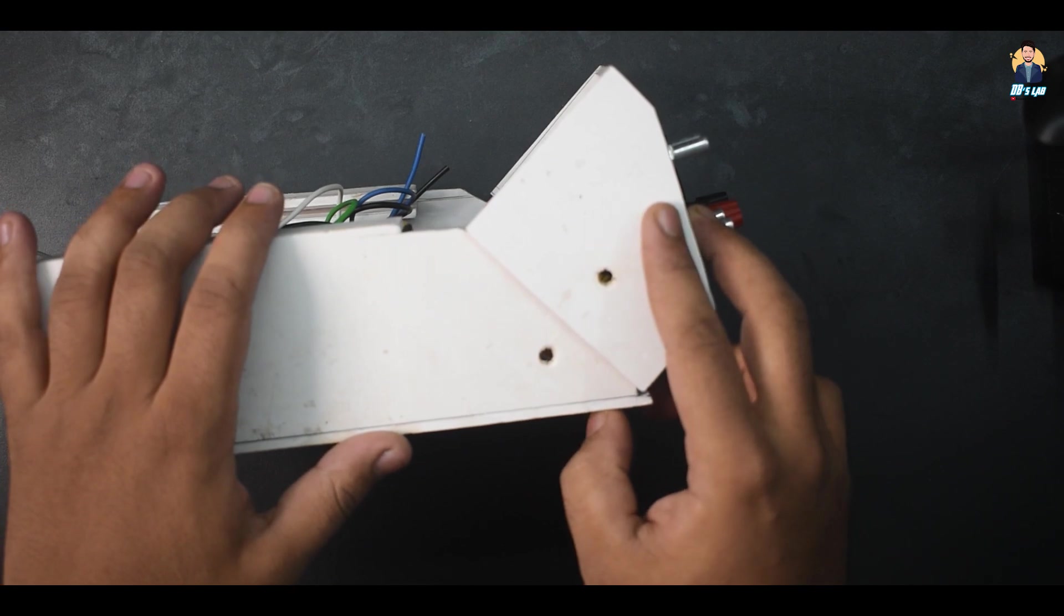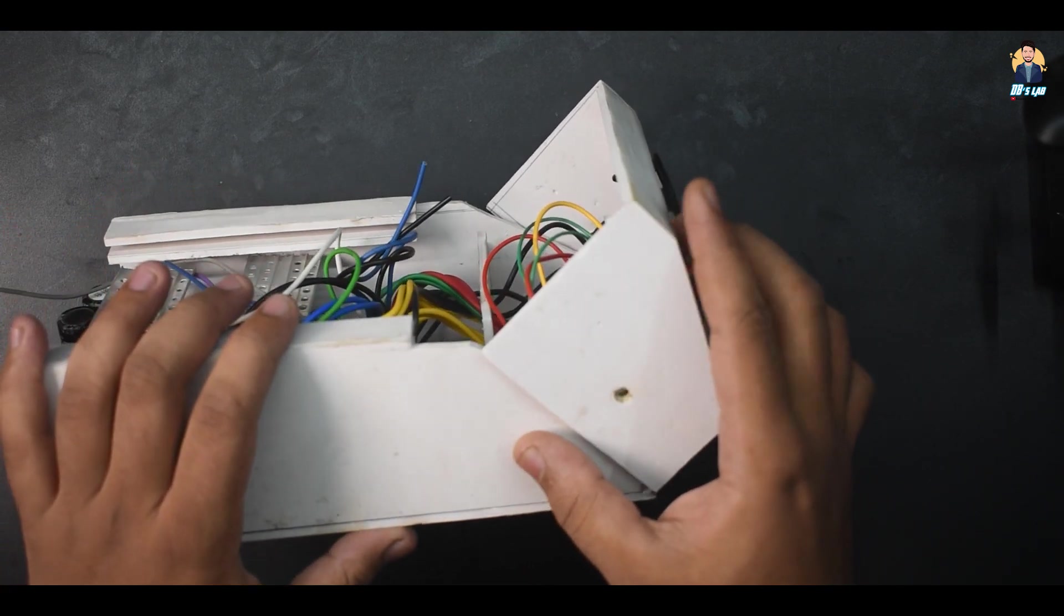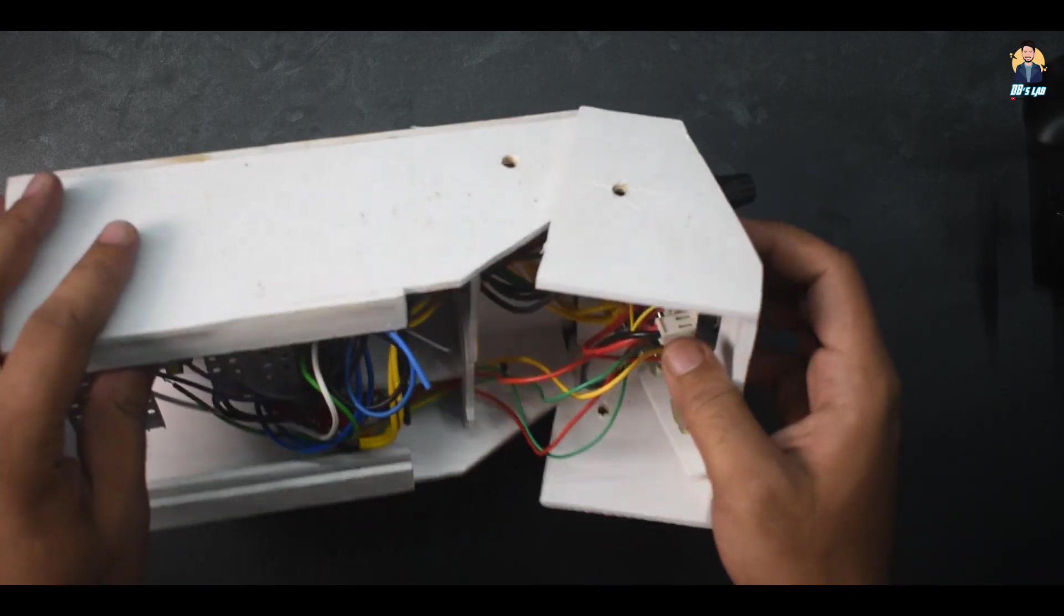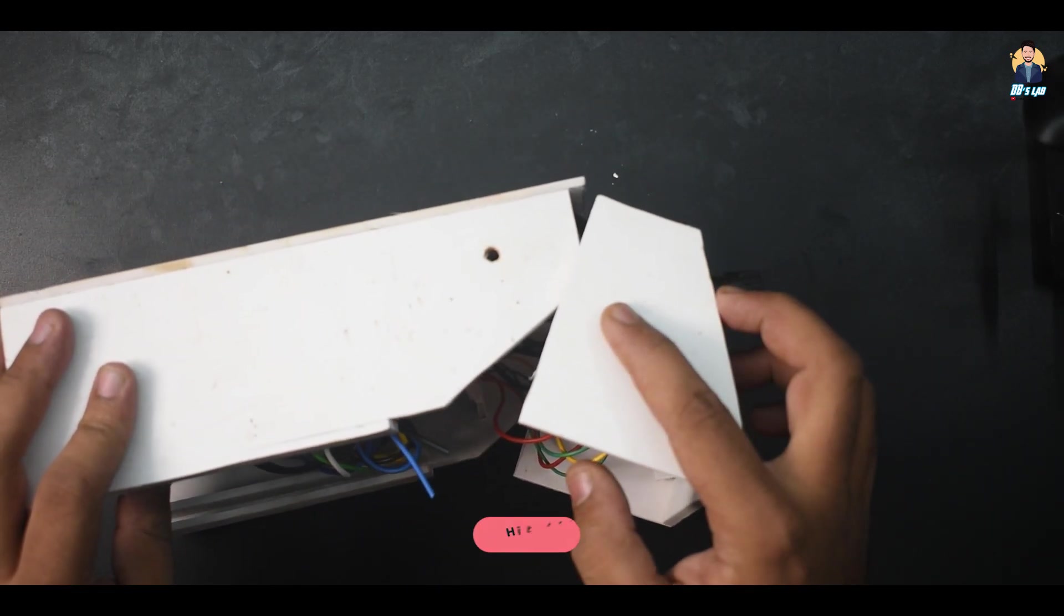I've now installed the front panel and made all the connections following the diagrams shown before. I've also made two screw holes to fix the front panel in place.